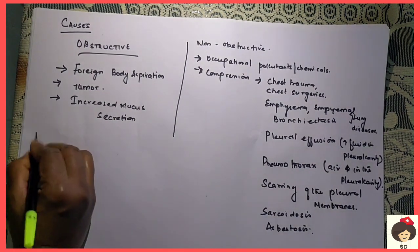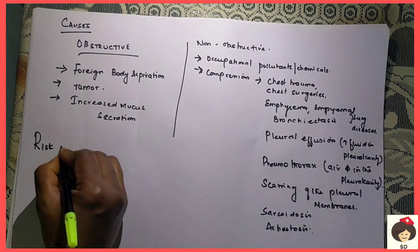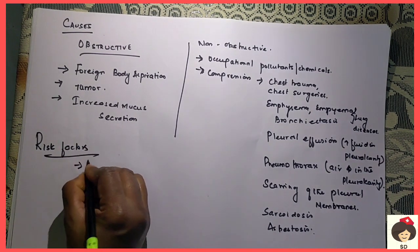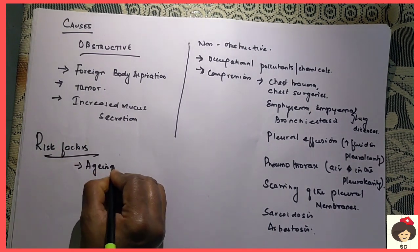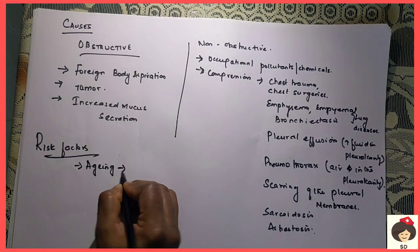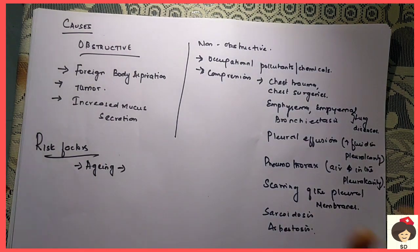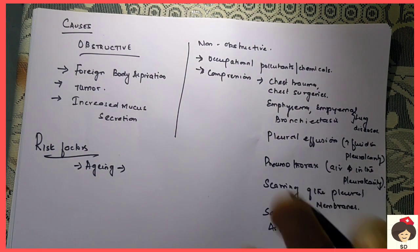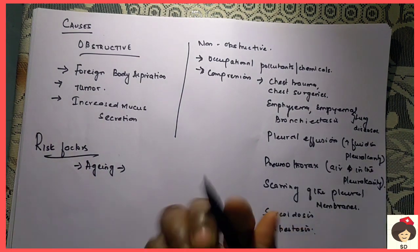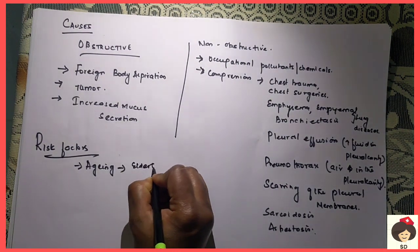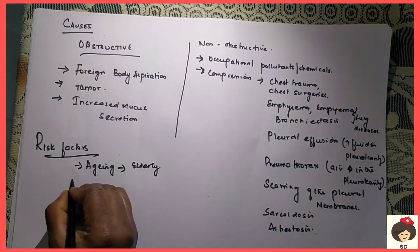Other than this, there are certain risk factors of Atelectasis. Aging — in old age due to degeneration, the alveoli cannot hold properly; there may be muscular degeneration where the alveoli cannot hold properly, so very elderly persons can develop Atelectasis. And next is premature babies — in the seventh month of pregnancy, surfactant will be produced in the lungs.